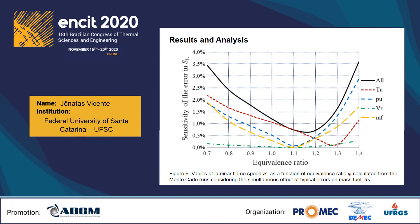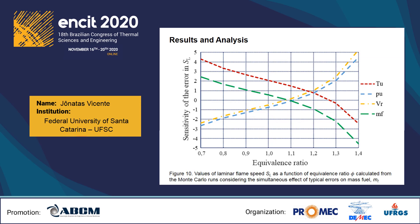Regarding the sensitivity analysis, this figure summarizes the confidence interval with all errors associated. At equivalence ratio 0.7, all errors contribute approximately equally to the total error in laminar flame speed. At equivalence ratio 1.1, the error is entirely due to errors in temperature. Conversely, at equivalence ratio 1.4, the errors are primarily due to errors in pressure and mass of fuel. The figure presents the relative sensitivities of the individual errors on laminar flame speed. The results indicate that at low equivalence ratio, positive errors in temperature and mass of fuel result in positive errors in laminar flame speed, while the opposite occurs with errors in pressure and volume of the reactor. This situation is inverted at high equivalence ratio.